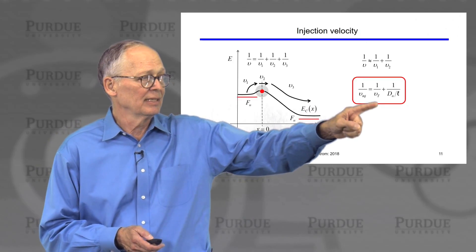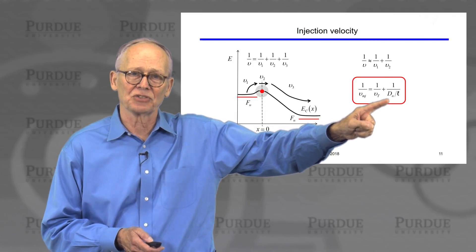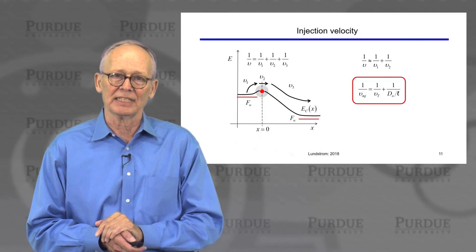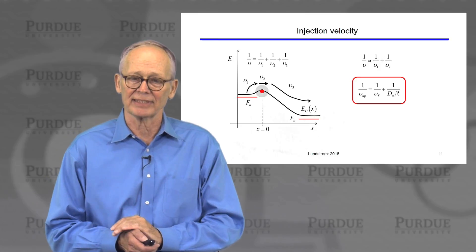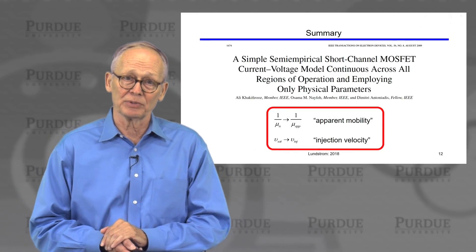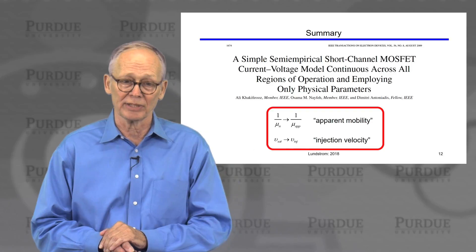In the ballistic limit, they diffuse across that region so quickly that the injection velocity becomes the ballistic injection velocity. So that's our physical interpretation of these two quantities.